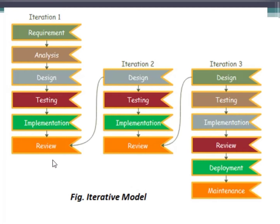After iteration 1, we will have the first version of the software. In iteration 2, we will incorporate changes, and after that we will have the second version of the software. Similarly, as many iterations follow, at the end of the last iteration, we will have our final software, which will be the perfect software according to the user requirement.